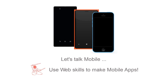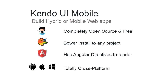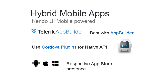For mobile, you can use your web skills to build mobile apps. Kendo UI Mobile lets you build hybrid or mobile web apps — completely open source and free. It has Angular directives and is totally cross-platform. For hybrid apps powered by Kendo UI Mobile, there's a paid product called the Telerik AppBuilder — an IDE that lets you code, simulate, and build. You can use Cordova plugins for native APIs and publish to respective app stores.